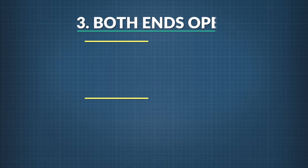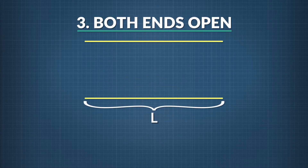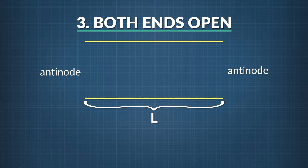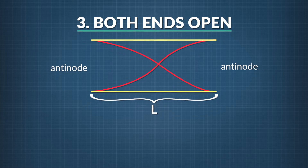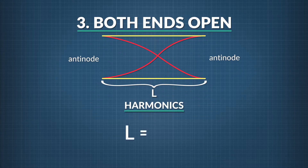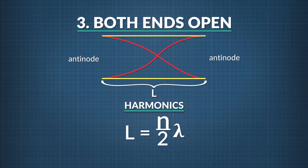For the third type, where both ends are open, the standing waves begin and end at the edge of the tube. Antinodes will form at each end because the ends are open. The fundamental frequency corresponds to a wavelength that looks like this. The harmonics for a system like this follow the same equation as for the tube closed at both ends: tube length L equals n divided by 2 times lambda, where n is any positive integer.